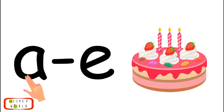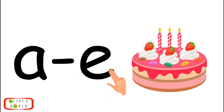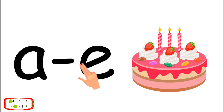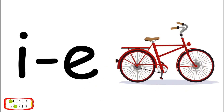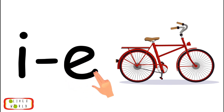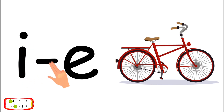A, Consonant E, cake, A. Repeat A, Consonant E, cake, A. I, Consonant E, bike, I. Repeat I, Consonant E, bike, I. O, Consonant E, home, O. Repeat O, Consonant E, home, O.